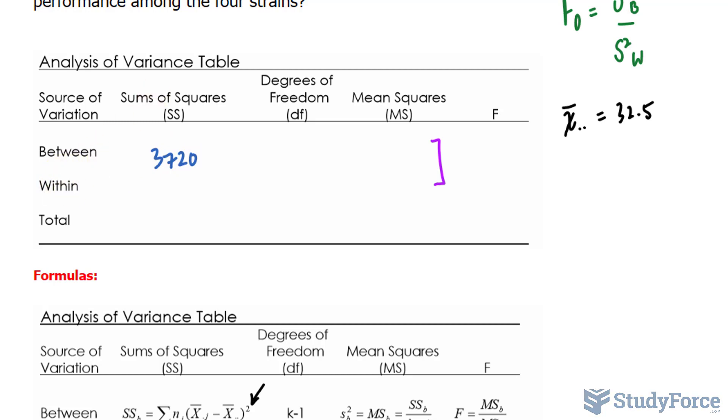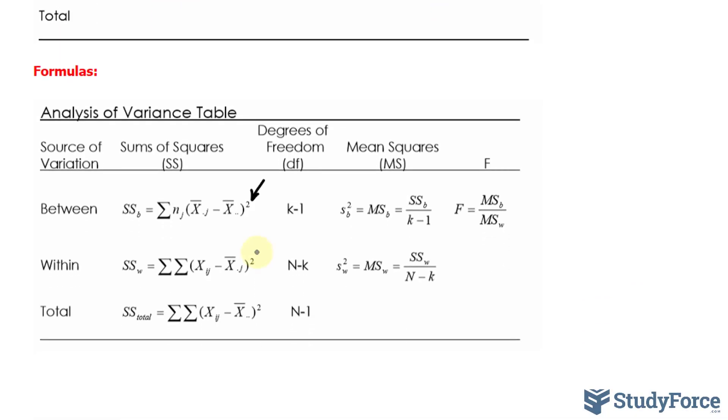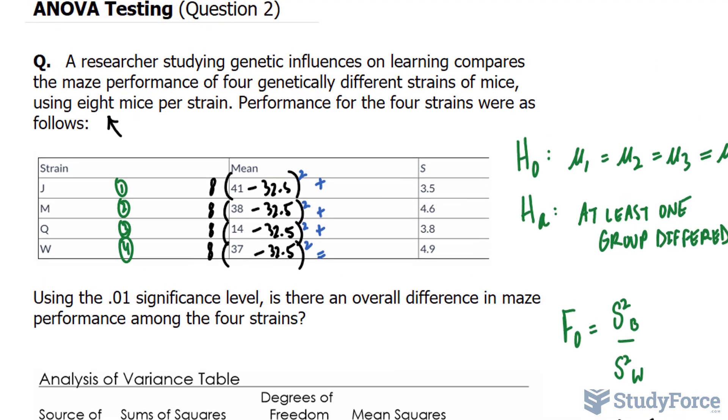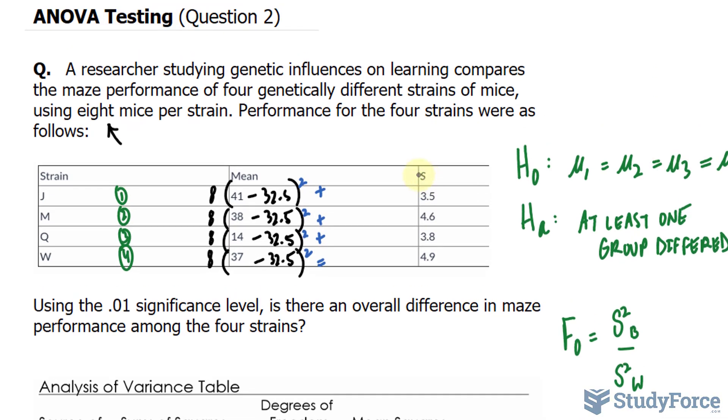Next, we'll find the sum of squares for within. And unlike before, we cannot use this formula because we don't have the individual data for each group. Instead, you use the following formula, where you take the standard deviation, you square it, so you get the variance. By squaring the standard deviation, you get what we call the variance. Then you multiply each of these values by the number of individuals in each strain, which was 8 minus 1, and you add them up like this.